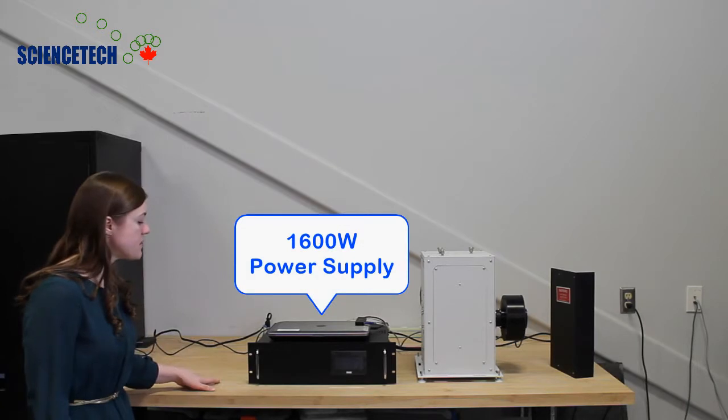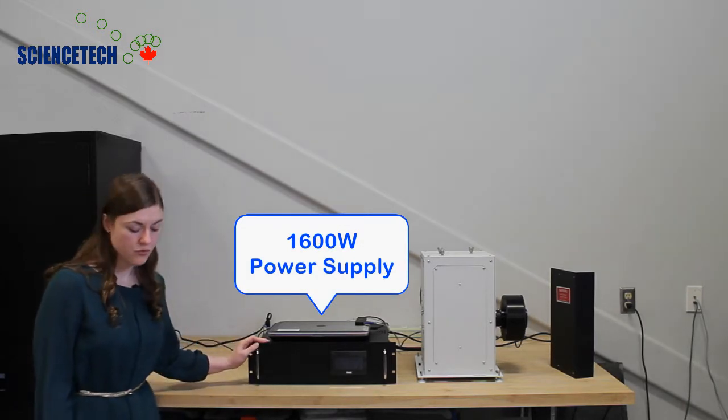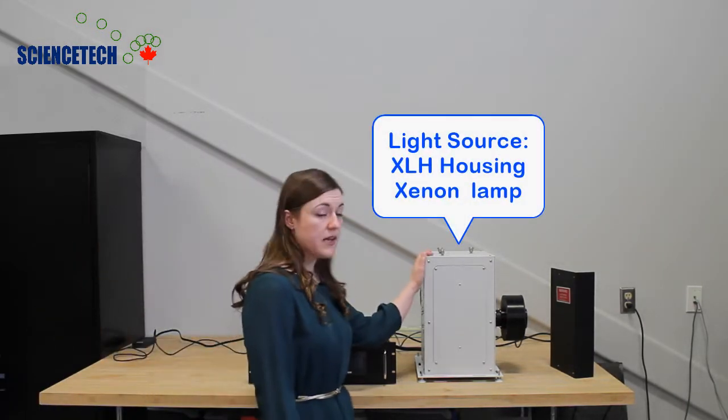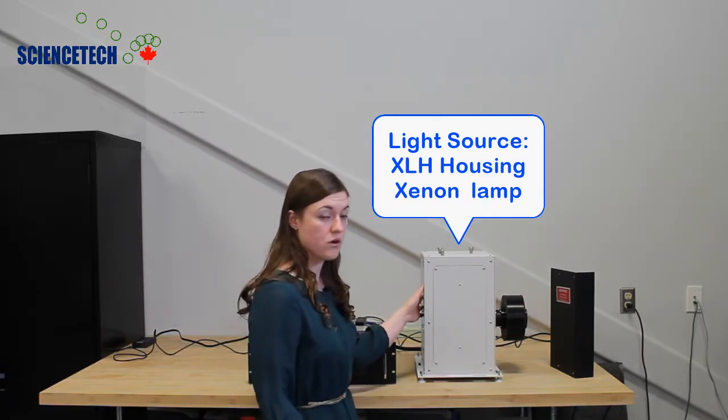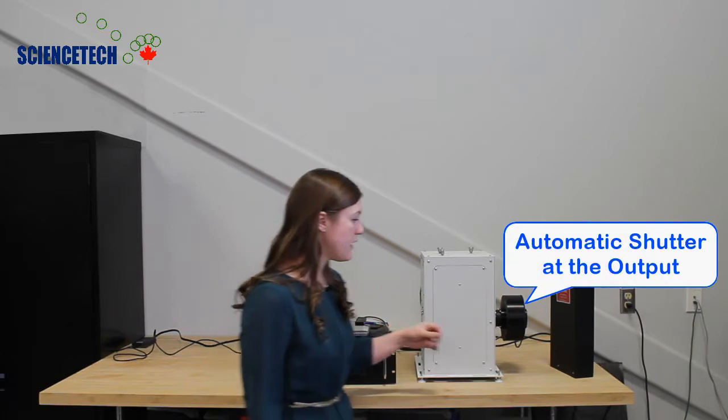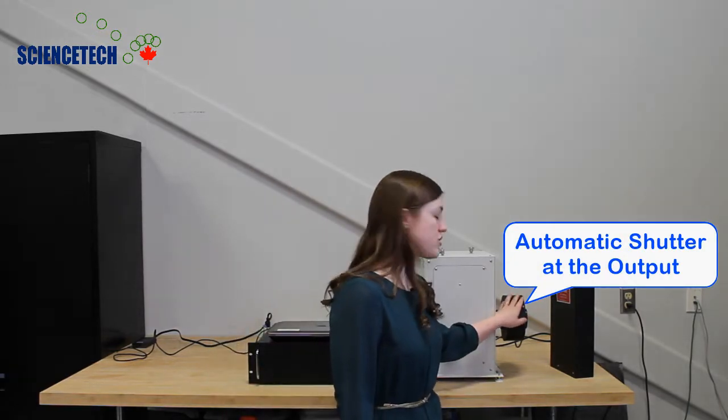The light source consists of a 1600 watt power supply as well as the XLH housing, and inside we have a 1600 watt Xenon short arc lamp. This system also has on the output an automatic shutter as an accessory.